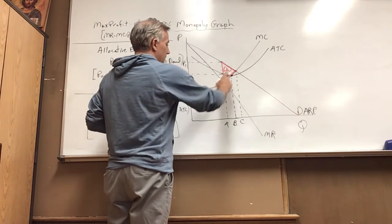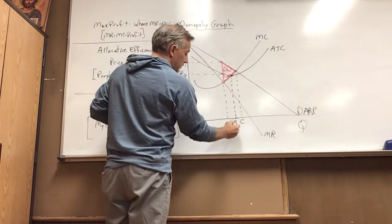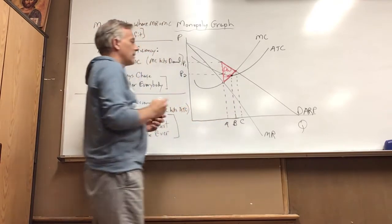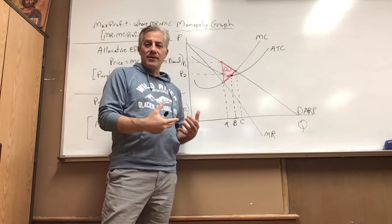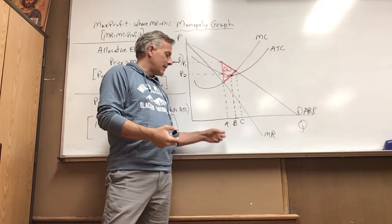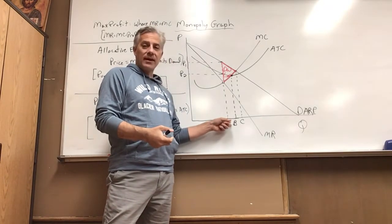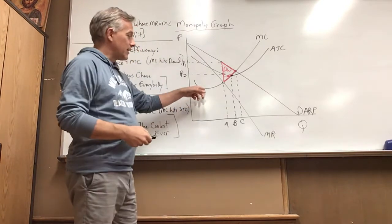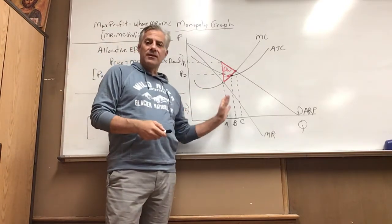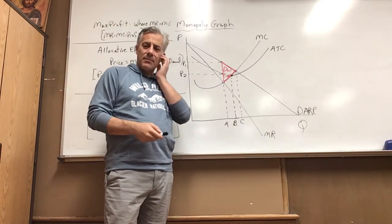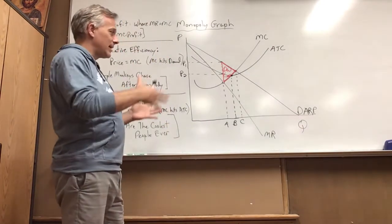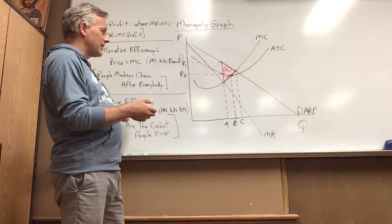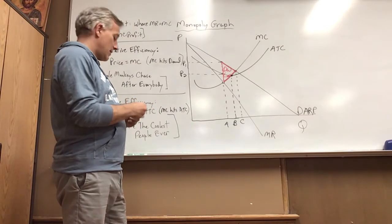Where MC hits ATC, that's productively efficient. Important to note, these do not always follow the same order, except I will say max profit pretty much comes right after diminishing marginal returns. The rest, and there's a couple other ones we're going to talk about as well, they can be in any kind of scrambled order. So you just pay attention to the intersections.